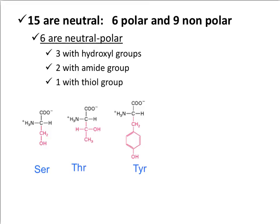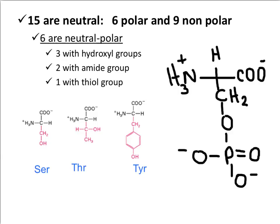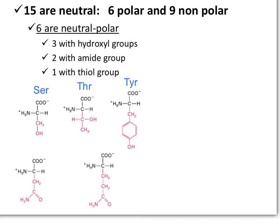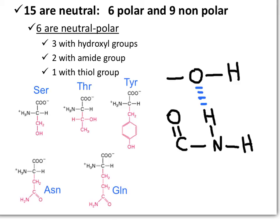Serine, threonine, and tyrosine have hydroxyl groups (OHs) that can be modified by adding phosphate groups, which are important for enzyme regulation. Here we show the modification of a serine by adding a phosphate group by an enzyme called a kinase. Asparagine contains an amide and glutamine also contains an amide. All of these amino acids are excellent hydrogen bond donors and hydrogen bond acceptors because they contain hydrogens and electronegative atoms with lone pairs.